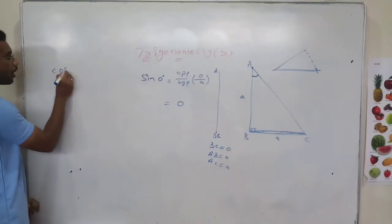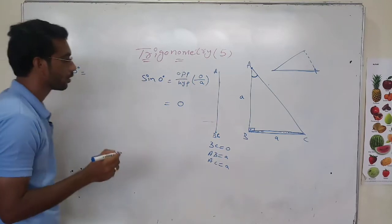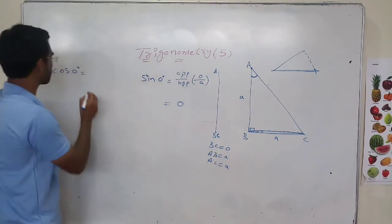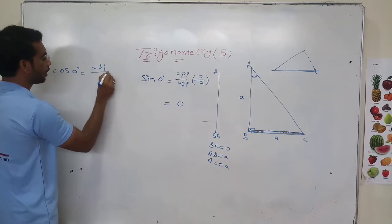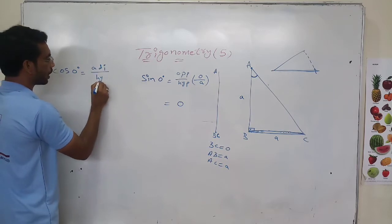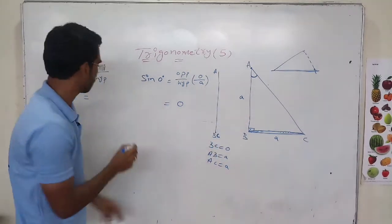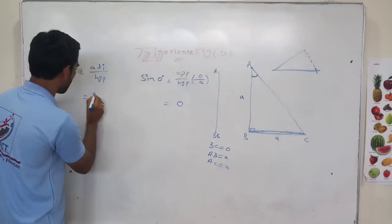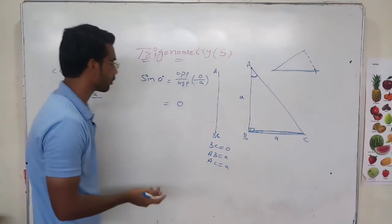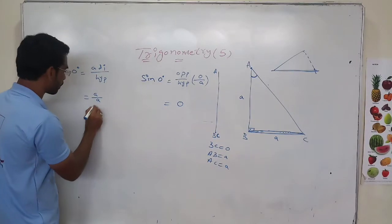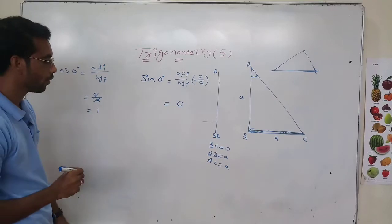Now we will see cos 0 degrees. What is cos theta? It is adjacent side by hypotenuse. The adjacent side is A and the hypotenuse is also A, so A by A equals 1. Cos 0 degrees equals 1.